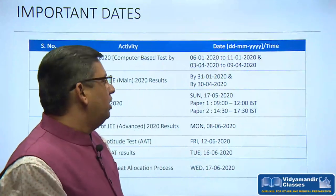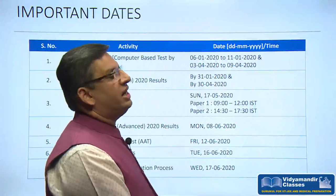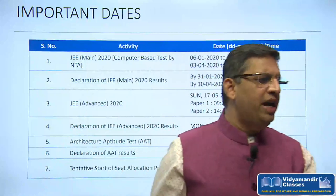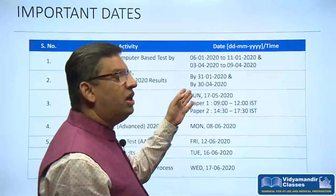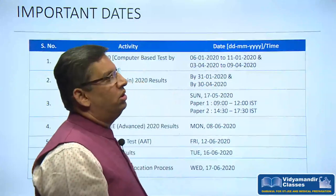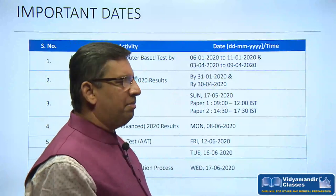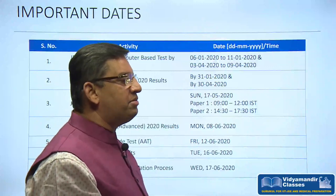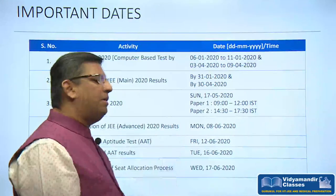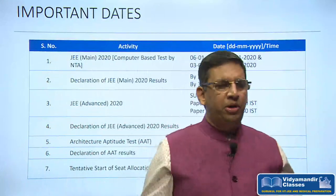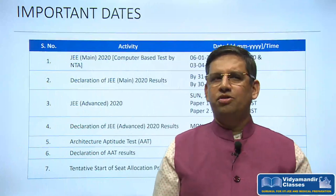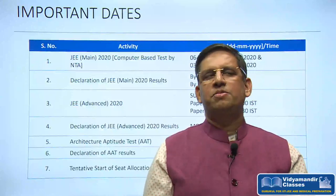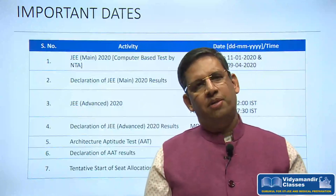JEE Advanced registration will open after the JEE Mains April session results, that is after 30th April. After registering, your admit card will be issued and you will appear for the exam on 17th May at your exam centers. The exam is in two shifts, same as every year, and it is a Computer Based Test (CBT), conducted this time by IIT Delhi.